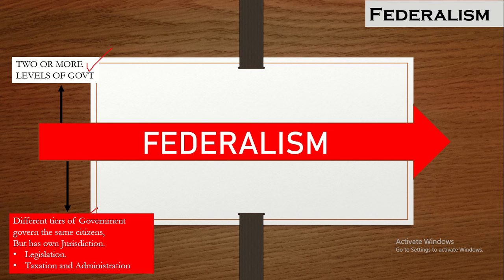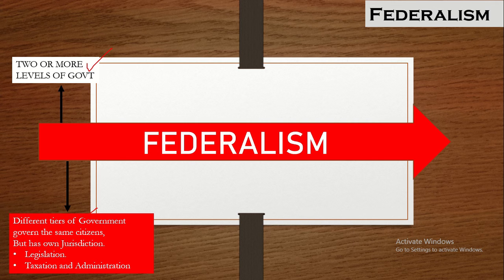For example, legislation, taxation, and administration — different tiers of government govern the same citizens. That is the second key feature of federalism.